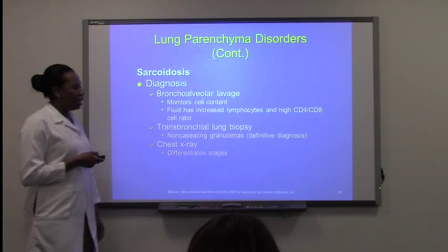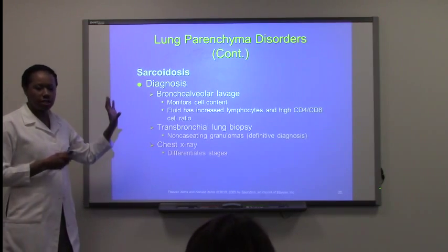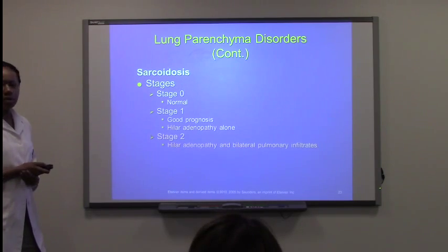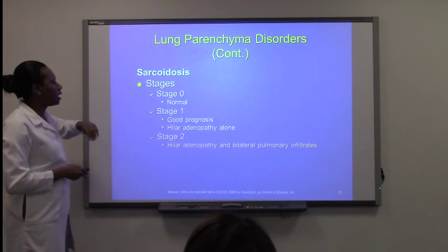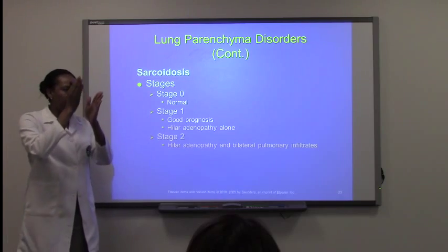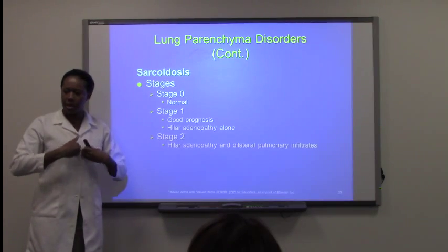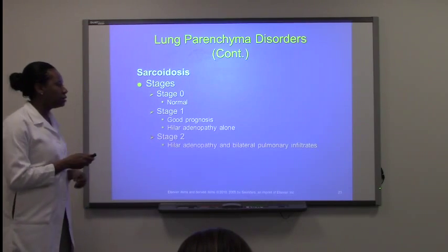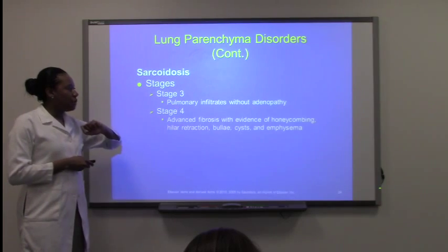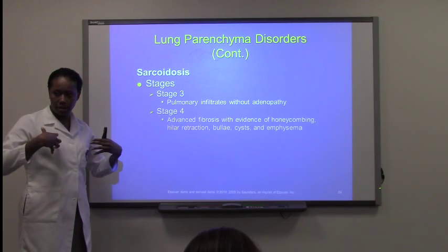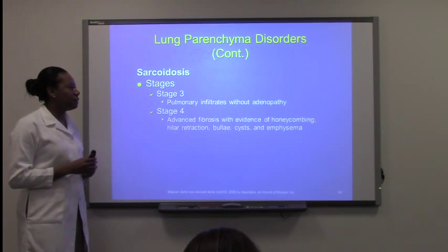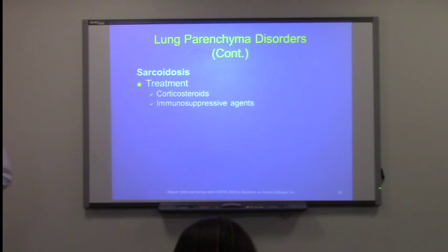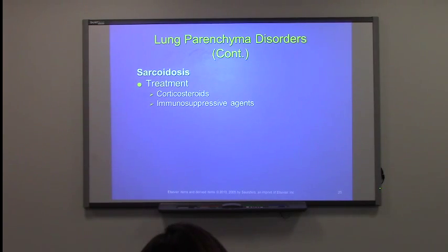Chest x-ray is used for definitive staging. Stage zero is normal. Stage one — good prognosis — is hilar adenopathy only. Stage two is hilar infiltrates extending into the bronchopulmonary area. Stage three is pulmonary infiltrates without adenopathy, spread through the bronchial tree. Stage four is advanced fibrosis with honeycomb appearance and significant alveolar destruction. Treatment includes corticosteroids and immunosuppressors.